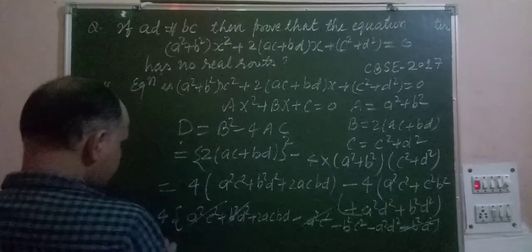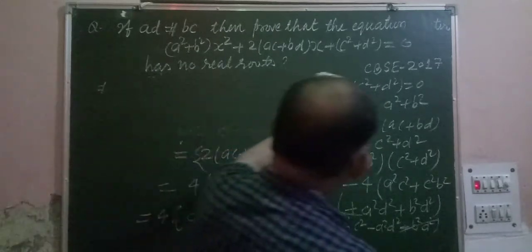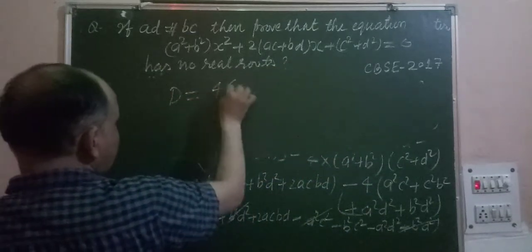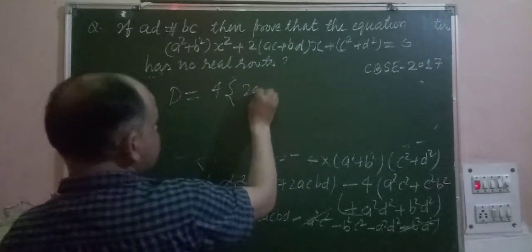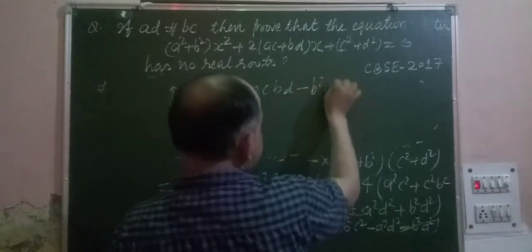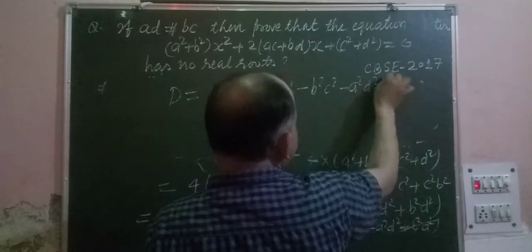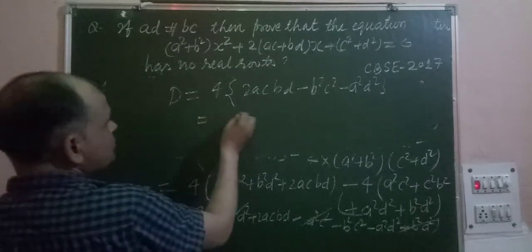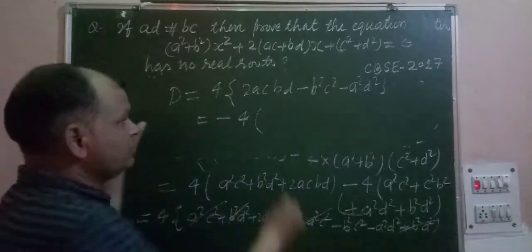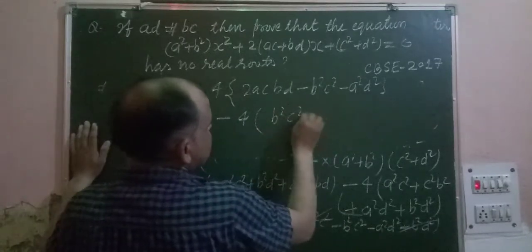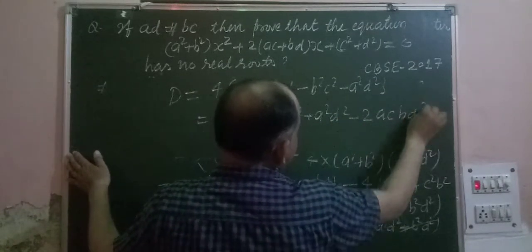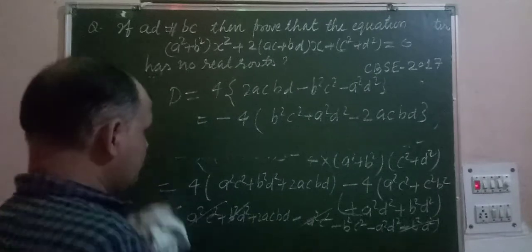Now we got: D = 4[2ACBD - B²C² - A²D²]. Taking minus common from this expression, it becomes: -4[B²C² + A²D² - 2ACBD], which simplifies neatly to: -4(BC - AD)².